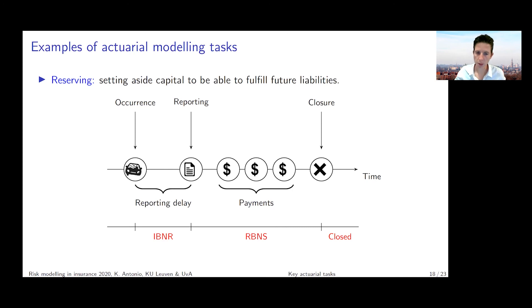is setting aside enough capital to be able to fulfill our future liabilities as an insurance company towards our policyholders. When an insured event occurs, think about a car accident or motor accident, typically this accident will be reported to the insurance company after a certain amount of delay. This delay can be very short for certain types of products and policyholders, but it can also be very long for other types of products. I think about liability claims or perhaps workers compensation products where the delay can be very long in reporting because the policyholder is not immediately aware of the damage that he or she incurred.